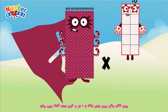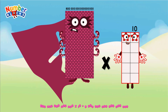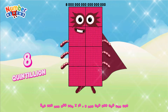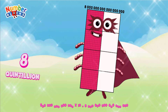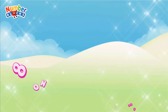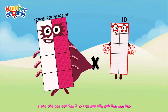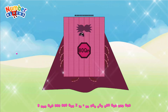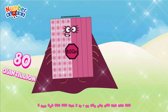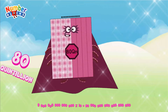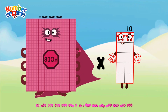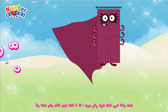800 quadrillion multiplied by 10 equals 8 quintillion. 80 quintillion multiplied by 10 equals 800 quintillion.